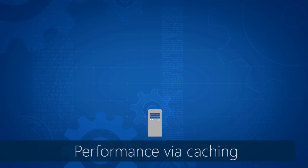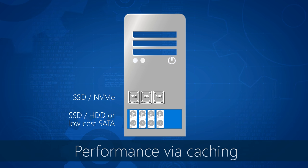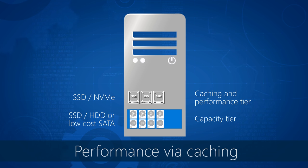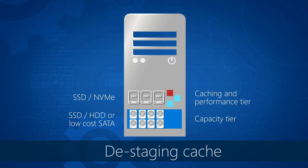Now we understand the deployment options — how does this actually work under the covers? We're creating a capacity tier and a performance tier from NVMe and SAS devices and using that for caching. When hot blocks are written to the storage, they're actually written to the SSDs or NVMe caching tier. As those blocks cool, they're moved down to the capacity devices — that might be SSDs, spinning hard drives, or low-cost SATA devices. So we're really using the hardware in an optimal way.